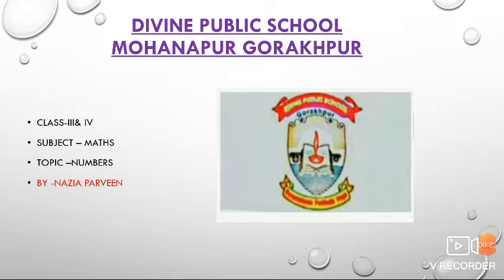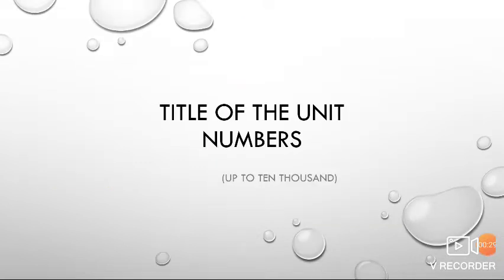You have to solve all the questions of Chapter 1 given in your book. Now, moving towards our second chapter — the title of the unit is 'Numbers up to 10,000.'